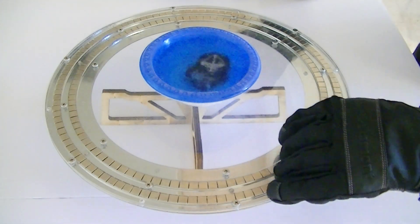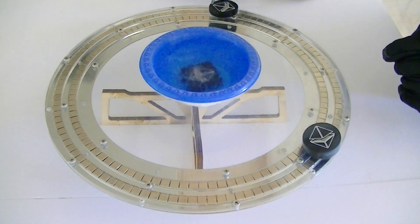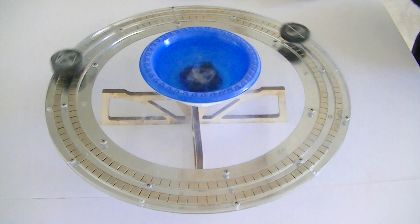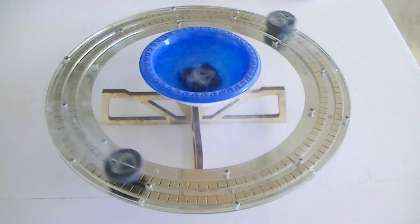Now we're going to see what happens when we place a superconductor above this circular track of magnets. Hey, look at that! The superconductor not only levitates above the track, but it also moves freely around the track.